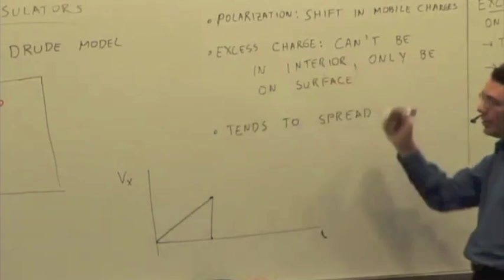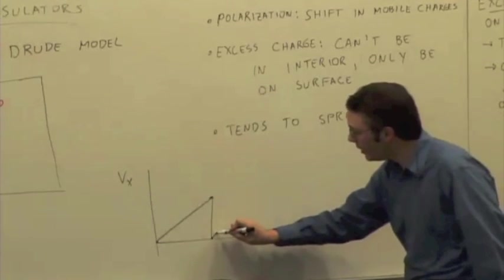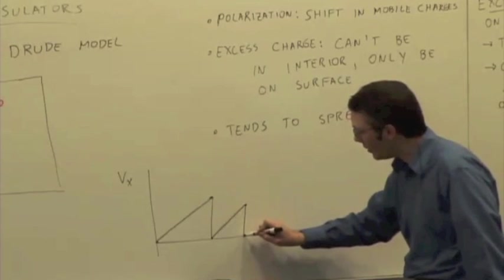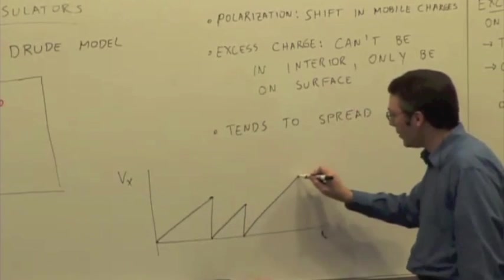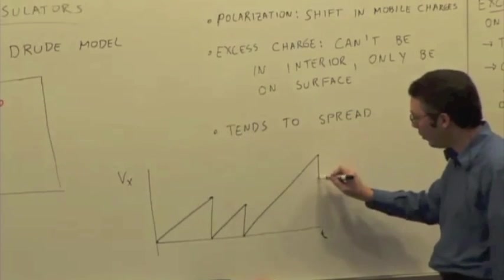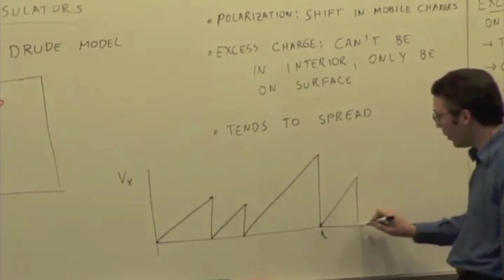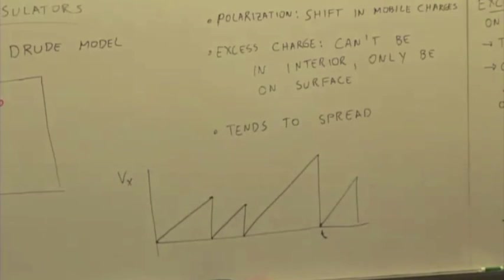There's still this force here due to the applied electric field, and so the speed increases again. But maybe now it collides with a core here, drops down to zero. Speed increases again, or maybe goes on for a little while, collides with a core, drops down to zero. And this keeps going over and over, and you get this sort of sawtooth-looking graph.